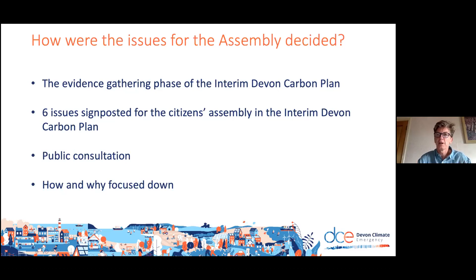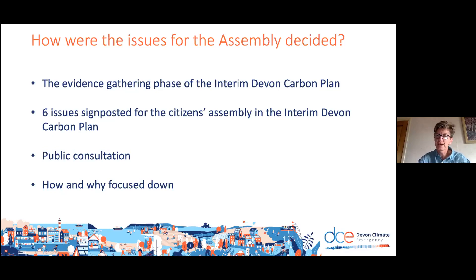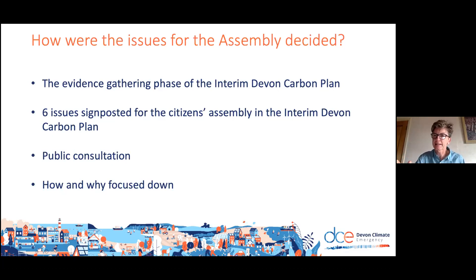Those two issues — landscape, farming, and diet — have been set aside from the assembly. There is a Devon Landscape Character Assessment that will go ahead over the coming years, and a Devon Landscape Policy Officer Group that will take those issues forward. In terms of livestock and diet, there are moves to establish a Devon Food Partnership and a Net Zero Farming Forum. So these issues are not being ignored or neglected, but given the time constraints, the remaining four issues could be packaged into three for the assembly to consider.